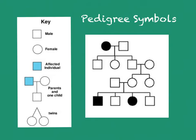The next thing you notice is that some of the boxes or circles are filled in, and some are not. Anytime you have a filled-in circle or box, that means that individual has the trait or the disease that you're following. They're called the affected individual.